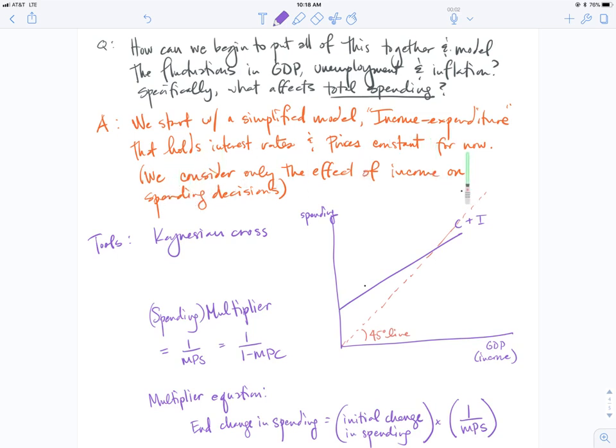This is an important simplification and assumption. Where we go next, we're going to eliminate those assumptions and allow prices and interest rates to fluctuate. But for now, we're just looking at a more simple relationship between income and spending. The Keynesian cross, the aggregate expenditure model. We looked at consumption and investment as determined by income, and the MPC is the slope of that line.